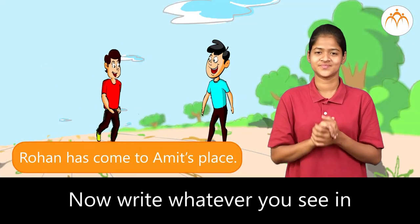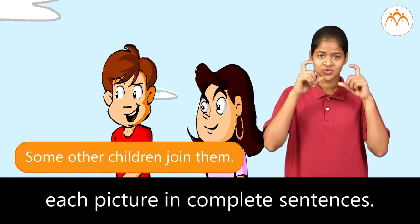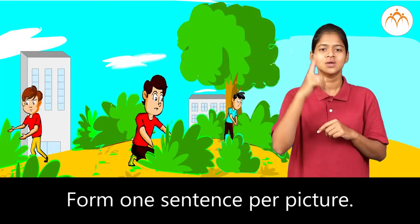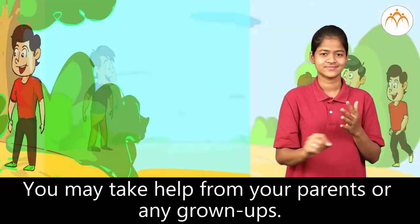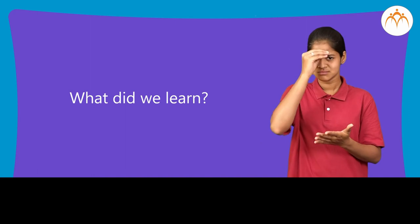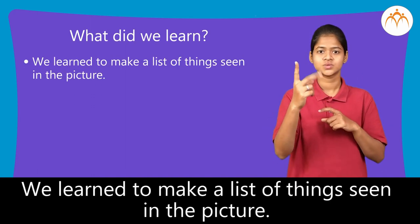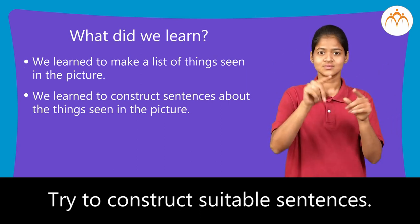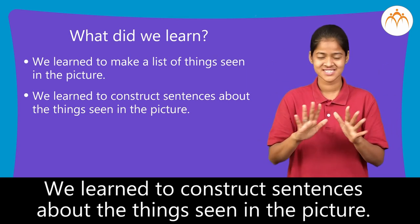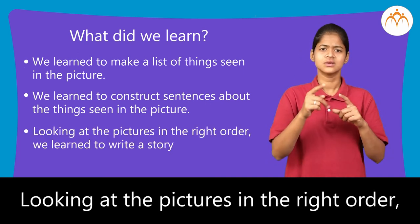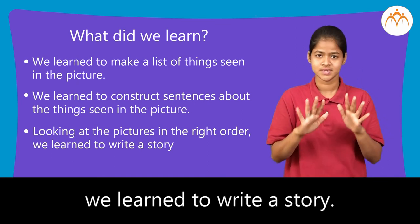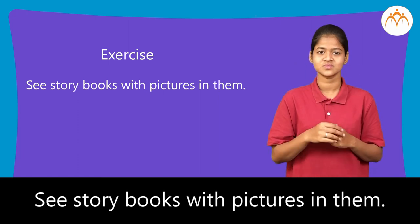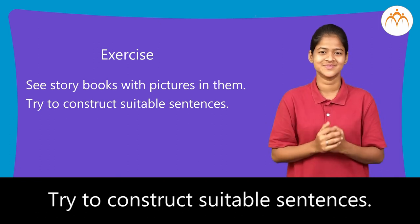Now, write whatever you see in each picture in complete sentences. Form one sentence per picture. You may take help from your parents or any grown-ups. What did we learn? We learned to make a list of things seen in the picture. We learned to construct sentences about the things seen in the picture. Looking at the pictures in the right order, we learned to write a story. Exercise: see storybooks with pictures in them and try to construct suitable sentences.